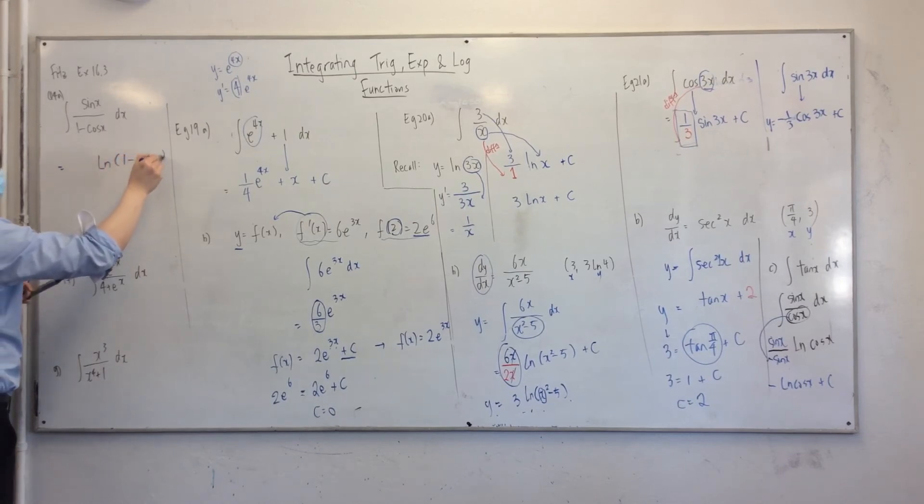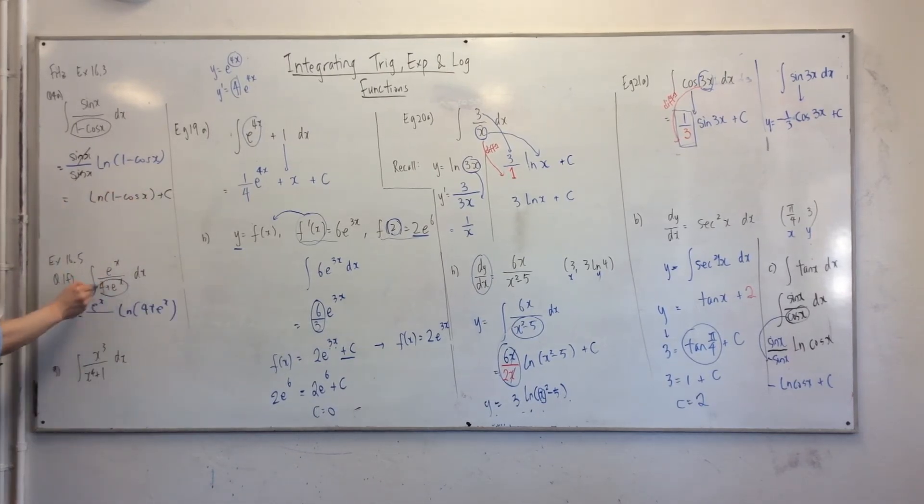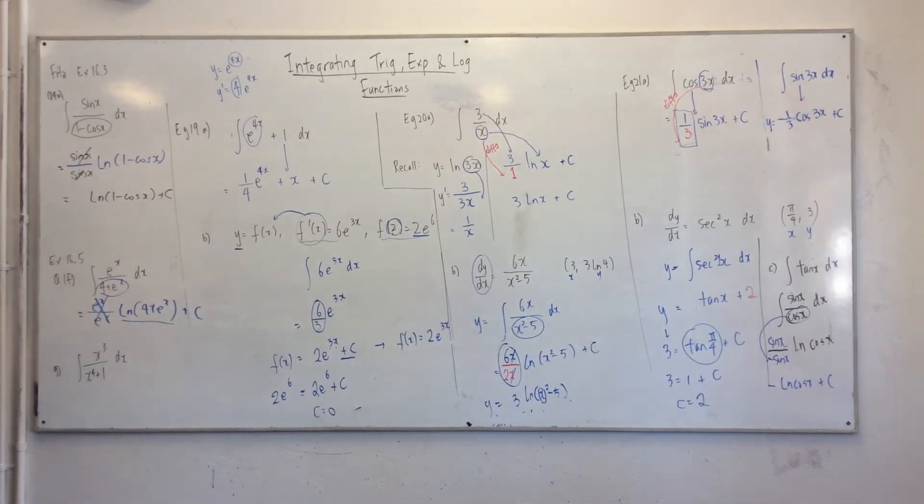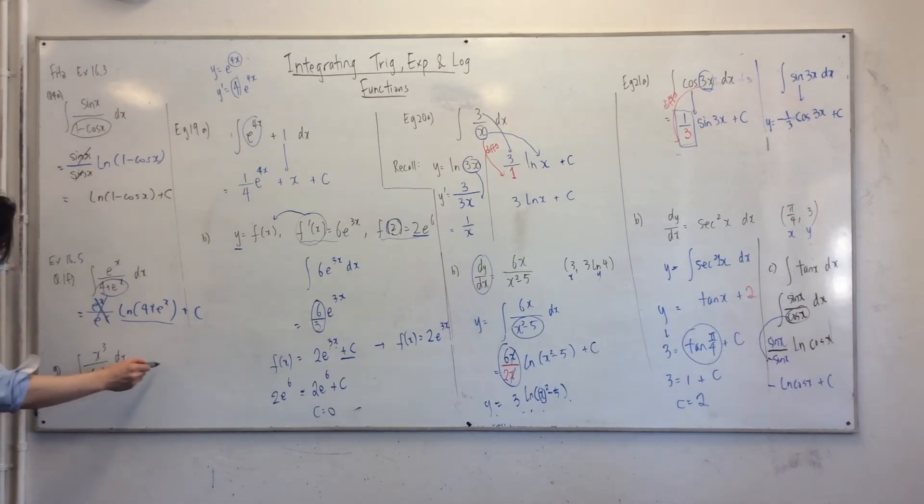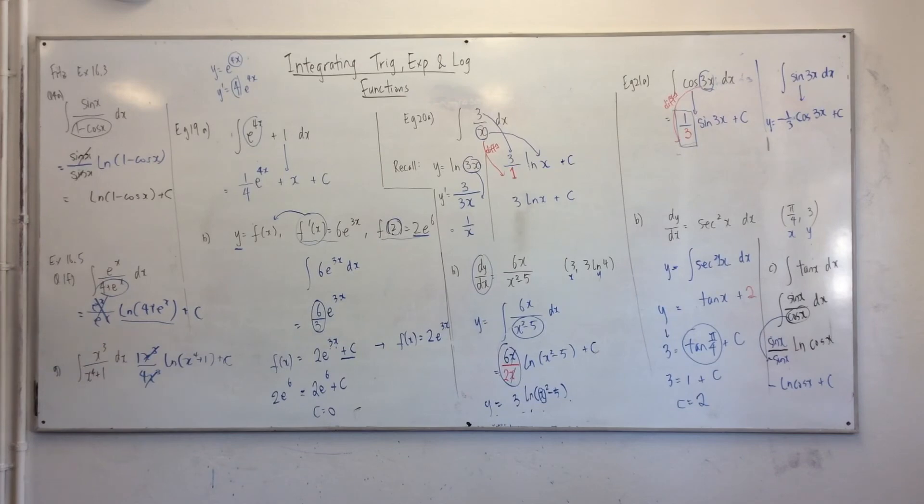1 minus cos x. Yep. I think you're a little bit... Yep. Let's do the same thing here. So the answer is just this, plus C. I won't do that. I'll just quickly do this one. So the answer is 1 over 4, that plus C. Okay? 1 over 4.